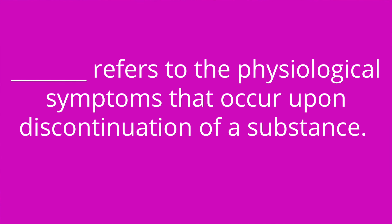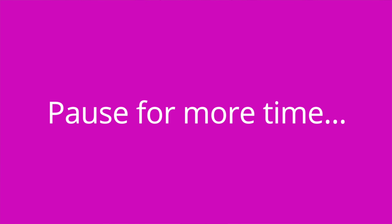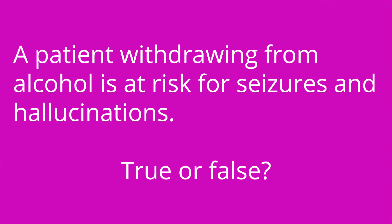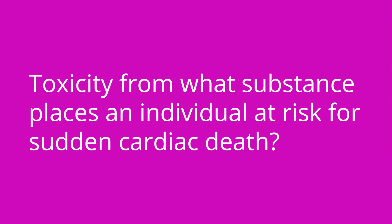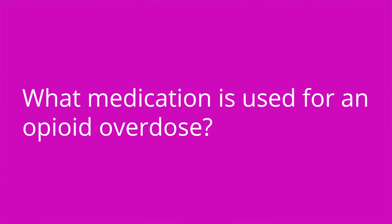It's quiz time — I've got five questions for you. Question one: blank refers to the physiological symptoms that occur upon discontinuation of a substance. The answer is withdrawal. Question two: a patient withdrawing from alcohol is at risk for seizures and hallucinations — true or false? The answer is true. Question three: confusion, euphoria, and pinpoint pupils are signs of intoxication from what substance? The answer is an opioid. Question four: toxicity from what substance places an individual at risk for sudden cardiac death? The answer is cocaine. Question five: what medication is used for an opioid overdose? The answer is naloxone.